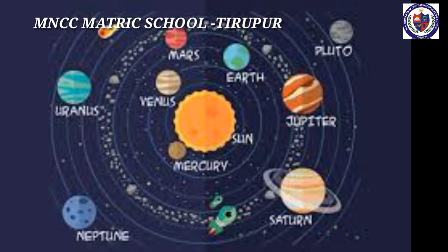Planets: The word 'planet' means wanderer. There are 8 planets in the solar system. They are Mercury, Venus, Earth, Mars, Jupiter, Saturn, Uranus and Neptune. All the planets rotate anticlockwise on their own axis except Venus and Uranus. The 8 planets revolve in their respective orbits because of the gravitational pull of the sun. They do not move out of their paths.